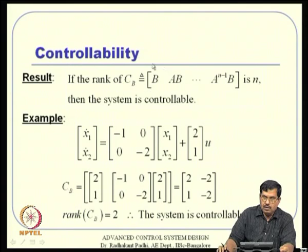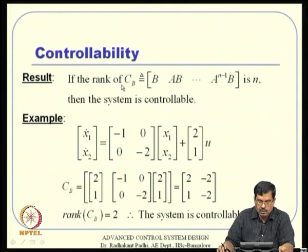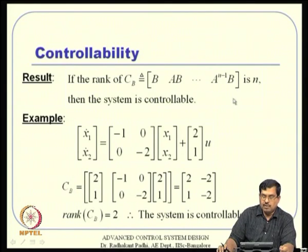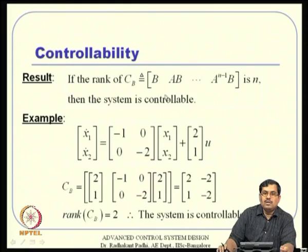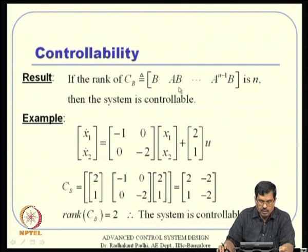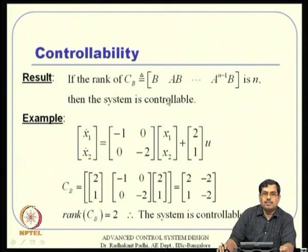Coming to controllability: before we design any control system we need to check controllability, and for linear time-invariant systems the test is very straightforward. We formulate the controllability matrix, and if the rank of this matrix is n then the system turns out to be controllable. The whole idea is that if the system is not controllable there is no point in trying to design a control system, because that will not be possible.